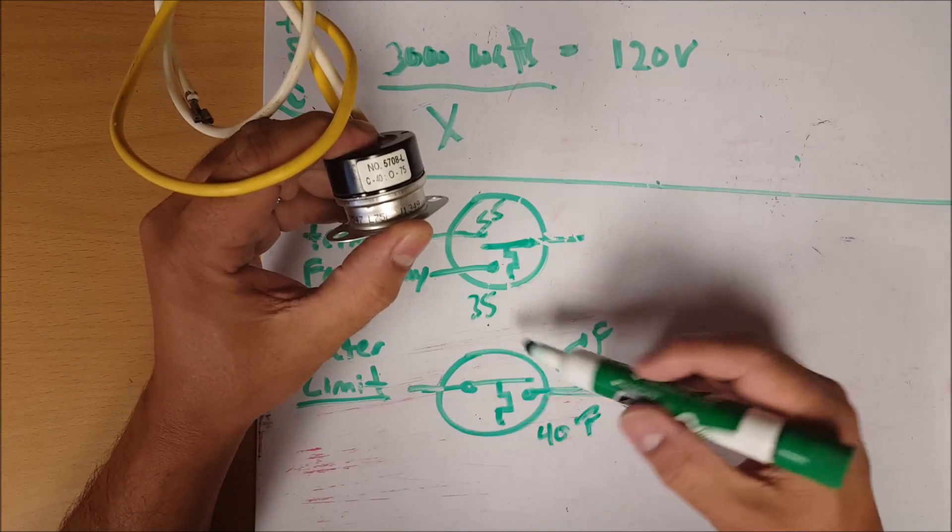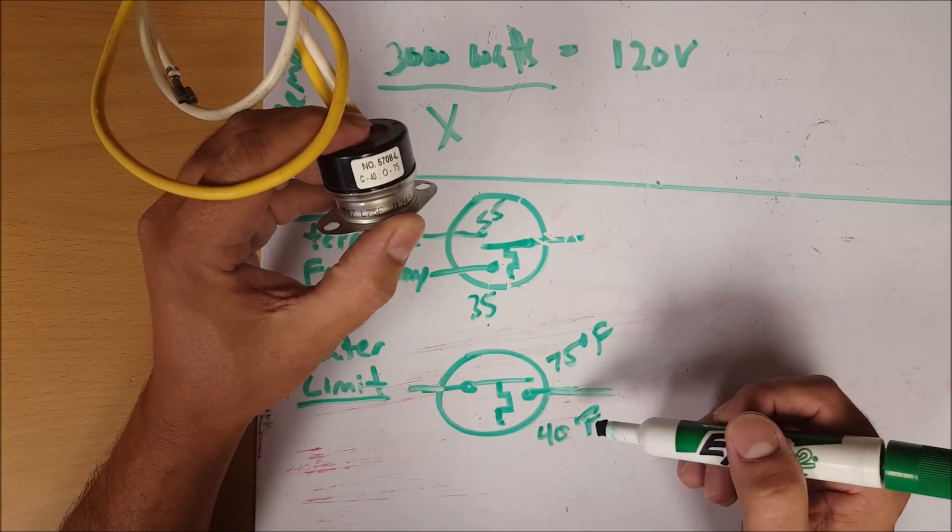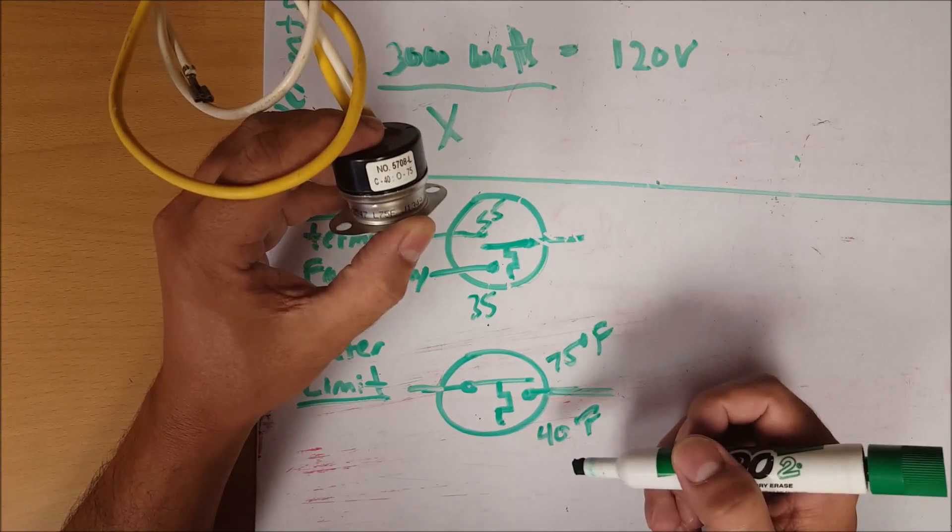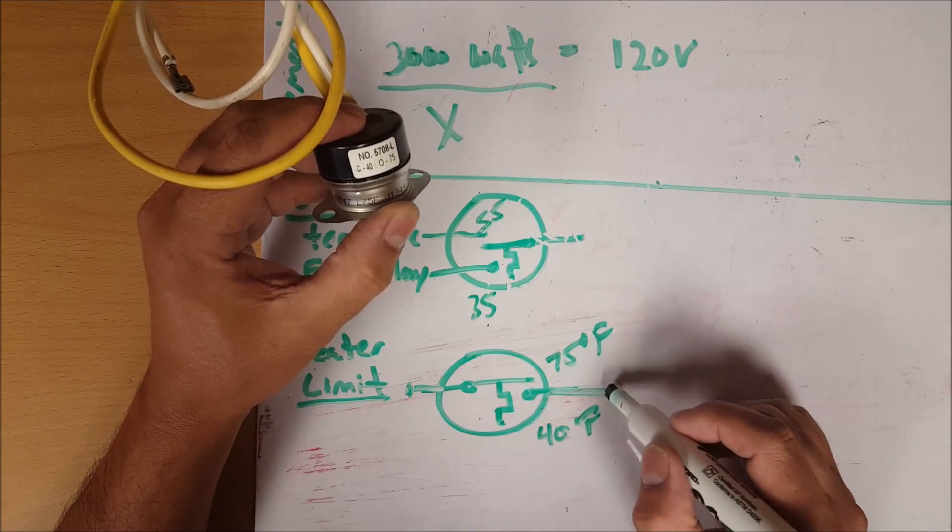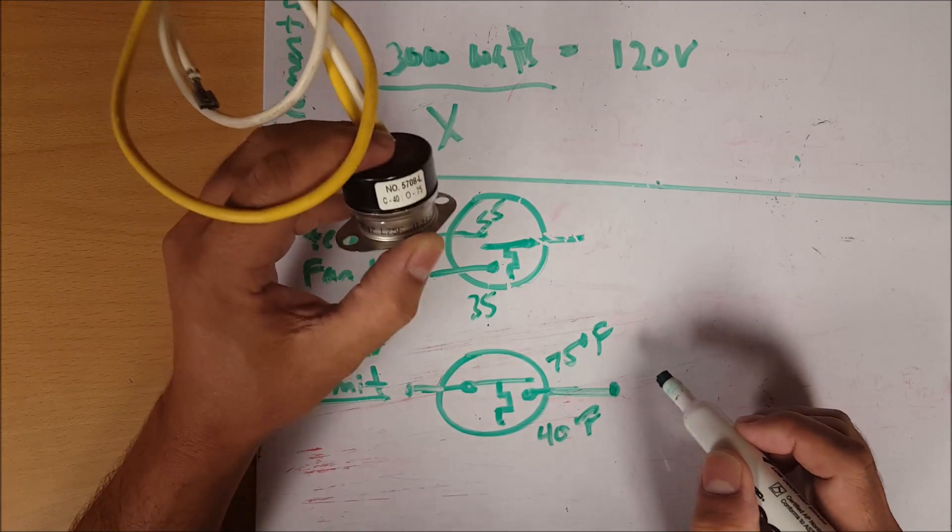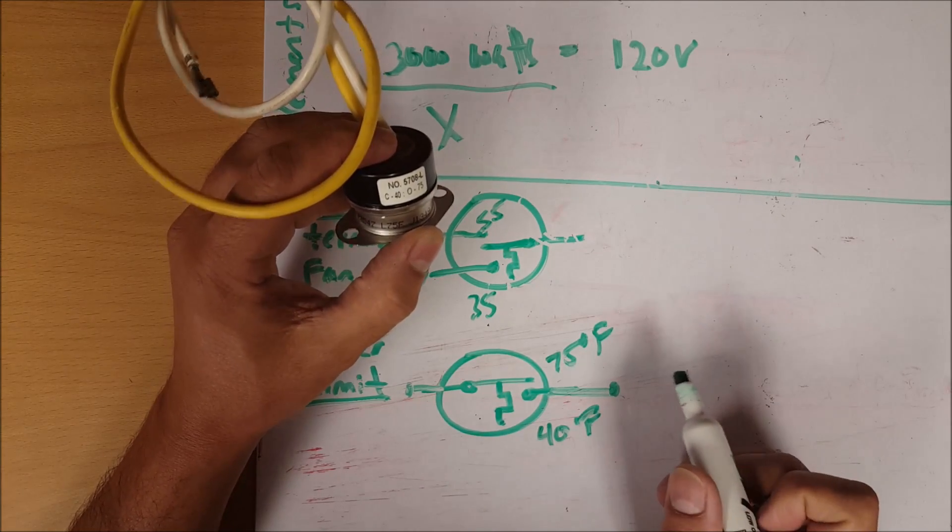So long as this thing is at 40 degrees, this switch should be closed. If the box temperature is at 40 degrees, that means this switch should already be closed. You could take an ohm meter or your continuity test and see if it's closed. If it's not closed, it's probably a bad switch.